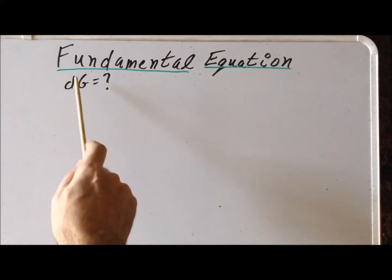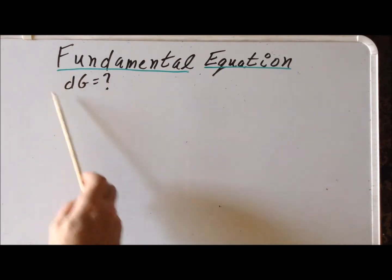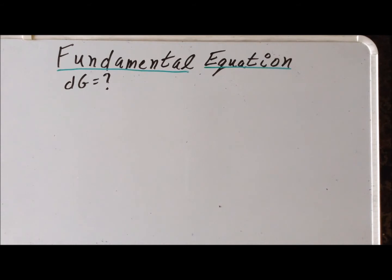Recall that G, the Gibbs free energy, is a state function of tremendous importance in the second law. The requirement that delta G be less than zero for a spontaneous process is nothing more than a restatement of the second law. Since we are combining the second law and the first law, we would like to develop more expressions for dG, hoping to derive interesting partial derivative identities, just as we have already done for the internal energy U and the enthalpy H.